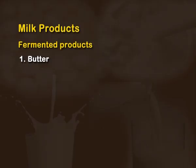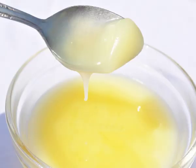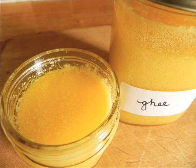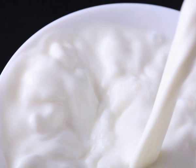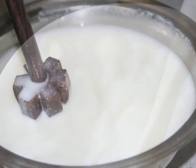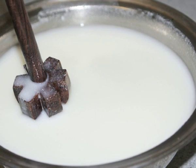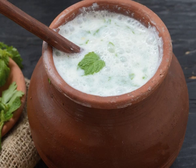Ghee is a type of clarified butter prepared by simmering butter and removing the residue. The texture, color and taste of ghee depends on the quality of the butter and the duration of boiling. Buttermilk is the liquid left behind after the separation of butter from cream. It is beneficial because it contains probiotic microbes and has very low fat content compared to milk or curd.